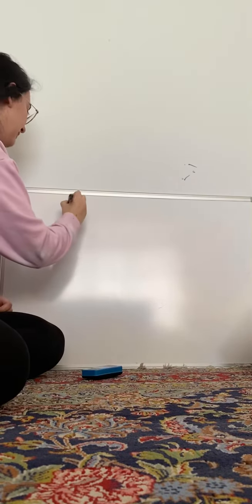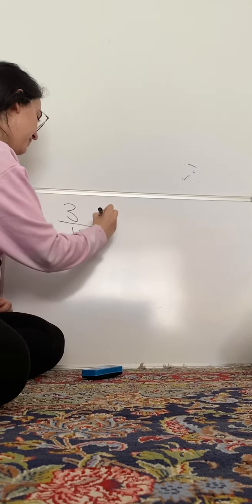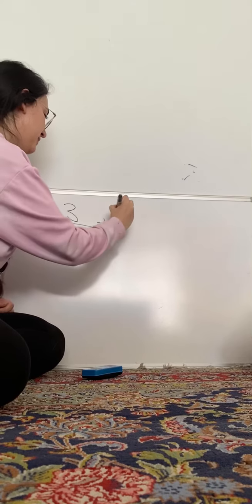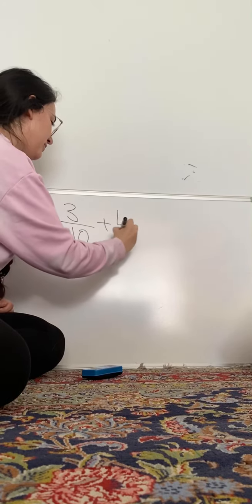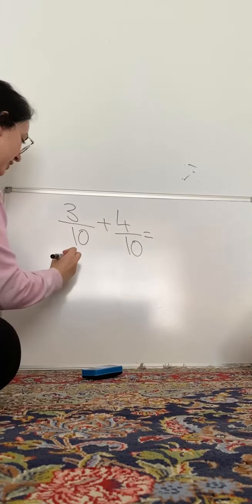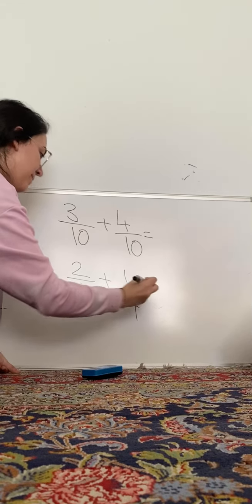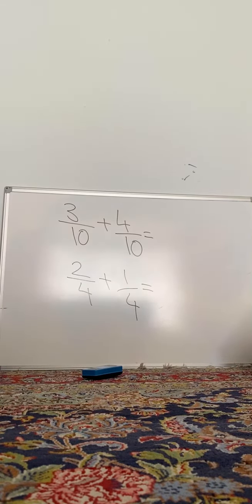Let me put some examples on the board for you, so you can do them by yourself. Let's do 3 tenths plus 4 tenths, and then we'll do another one. And then we'll do 2 fourths plus 1 fourth. Try those by yourself.